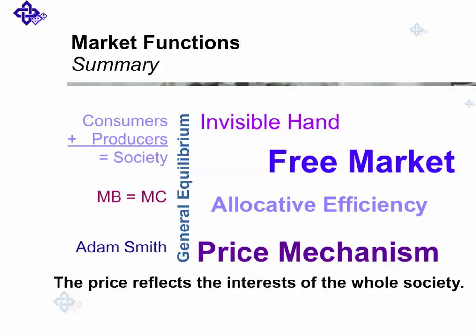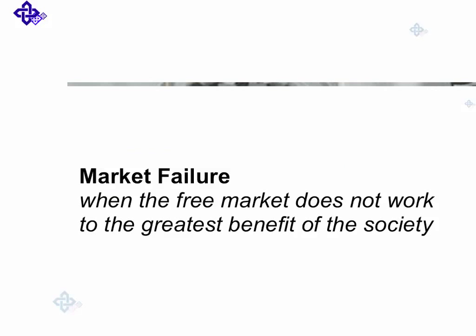In summary, we have talked about a lot of concepts: the free market and its price mechanism, allocative efficiency, the invisible hand from Adam Smith. And if consumers and producers make up the society, then the prices that we have in the free market reflect the interest of the whole society. But actually, we wanted to talk about market failure — when the free market does not work to the greatest benefit of society.